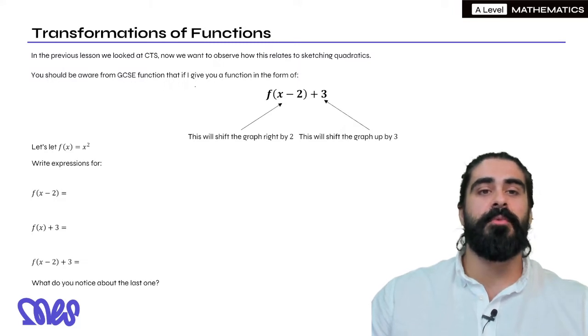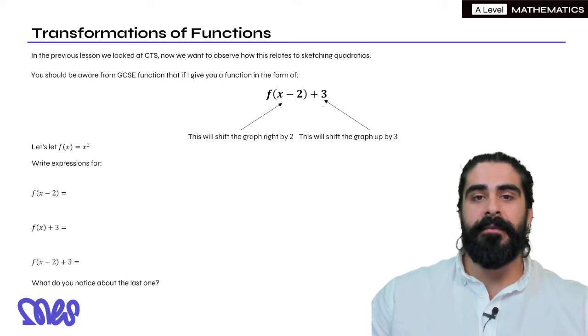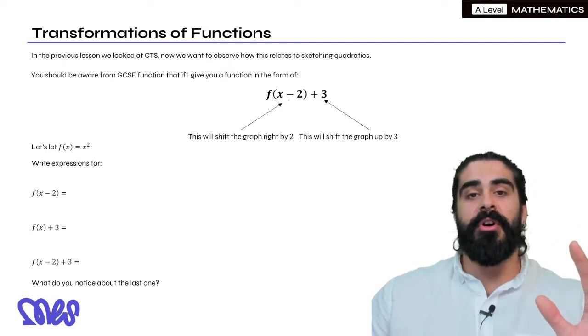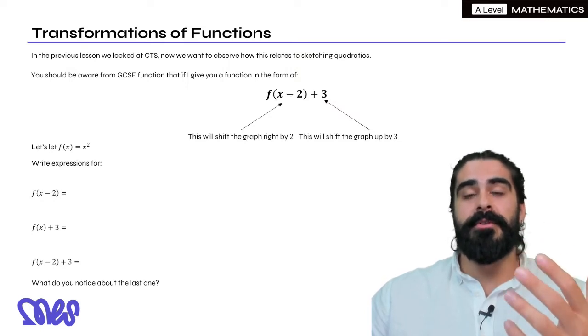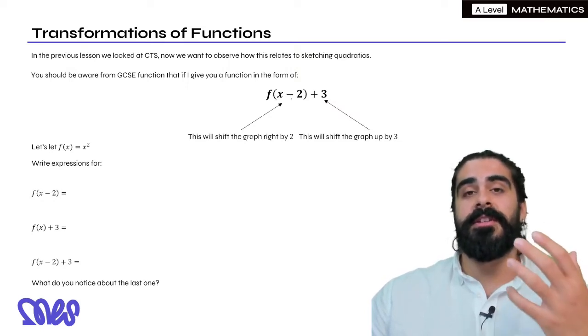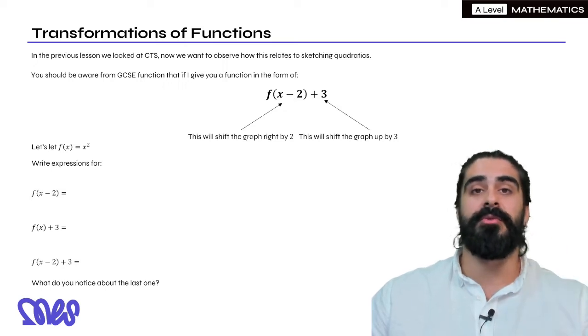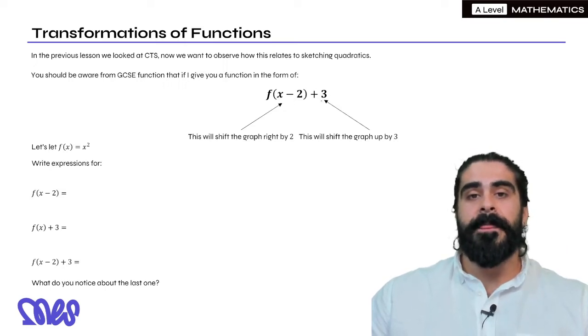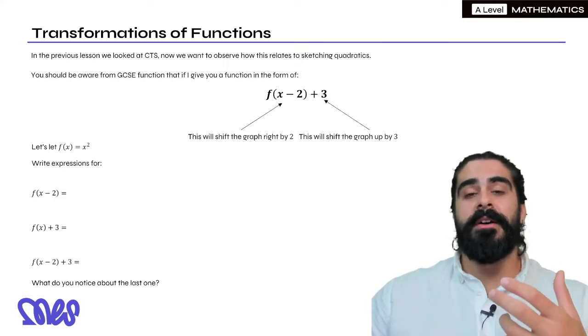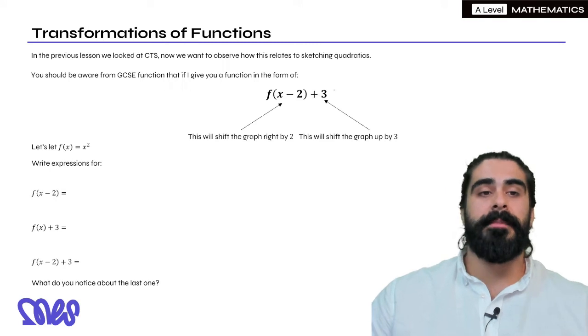From GCSEs you should be aware that if I give you a function of the form f(x-2)+3, then the f(x-2) will shift any graph to the right by 2 because the x-2 refers to the inputs of a function and it always does the opposite of what it says. So x-2 actually means adding 2 to the x values, and the +3 on the outside looks at the y values and you're adding 3 to all the y values which will shift the graph up by 3.